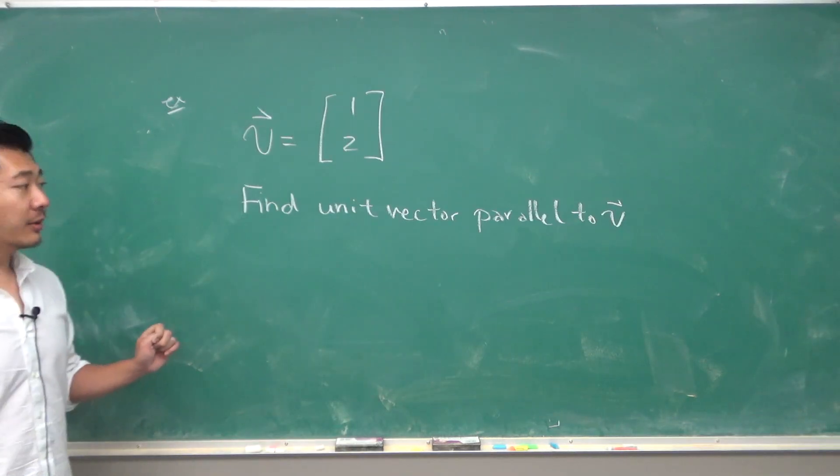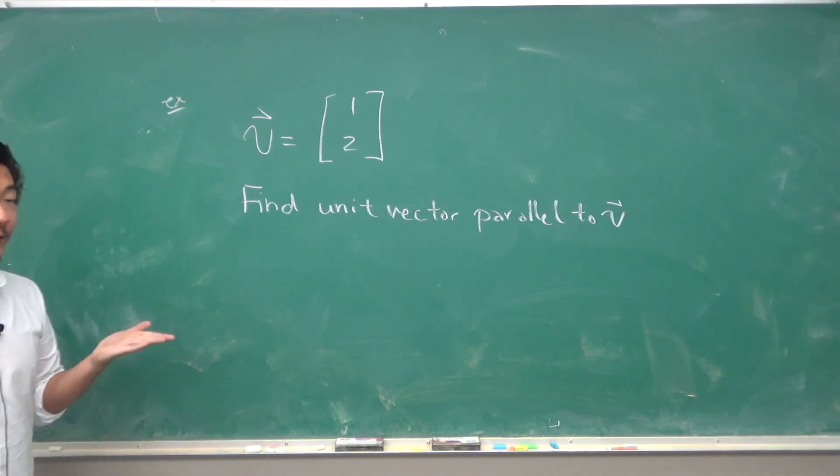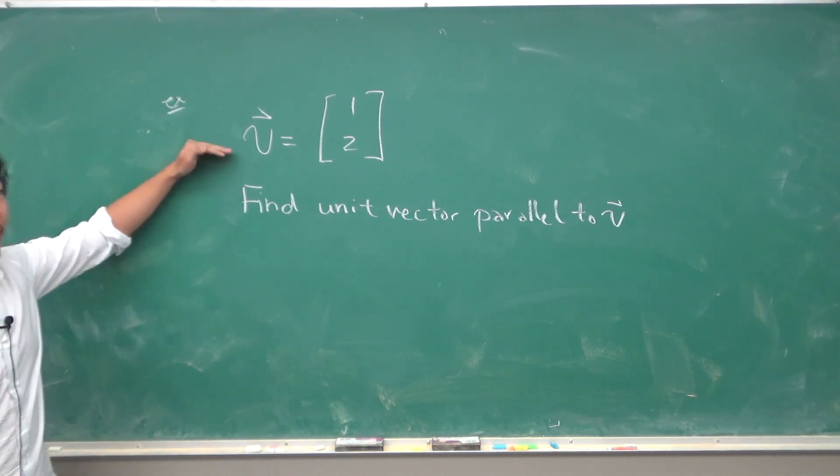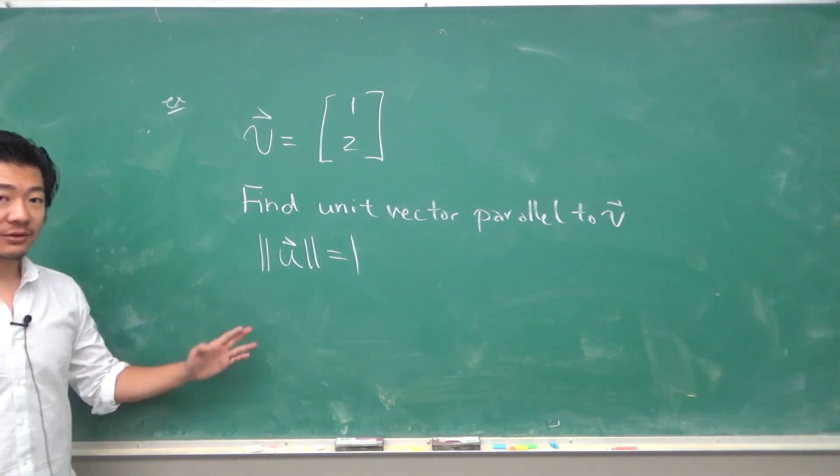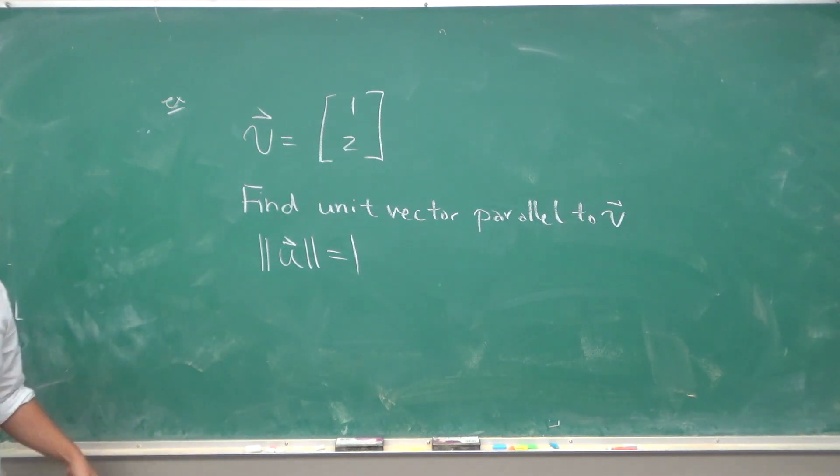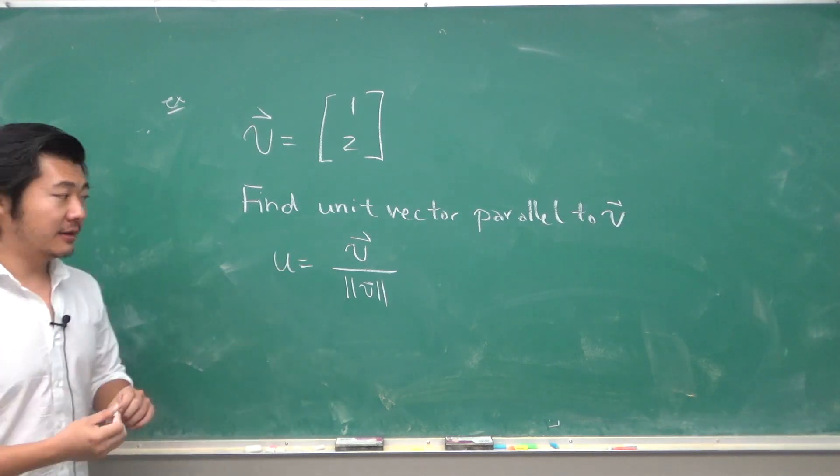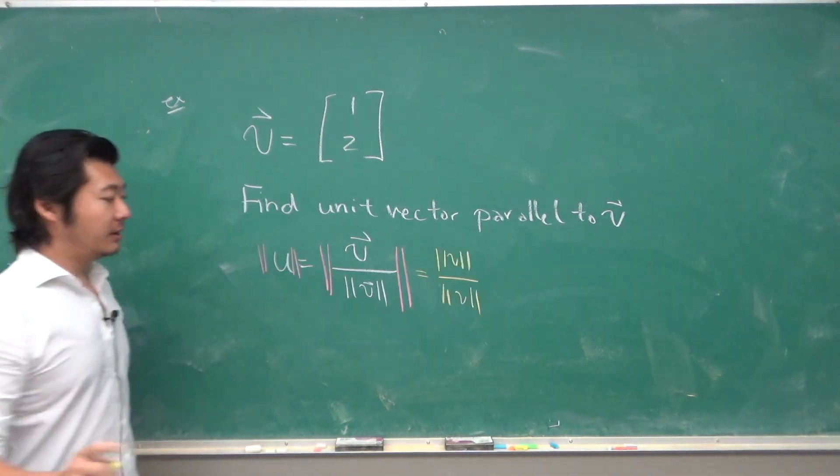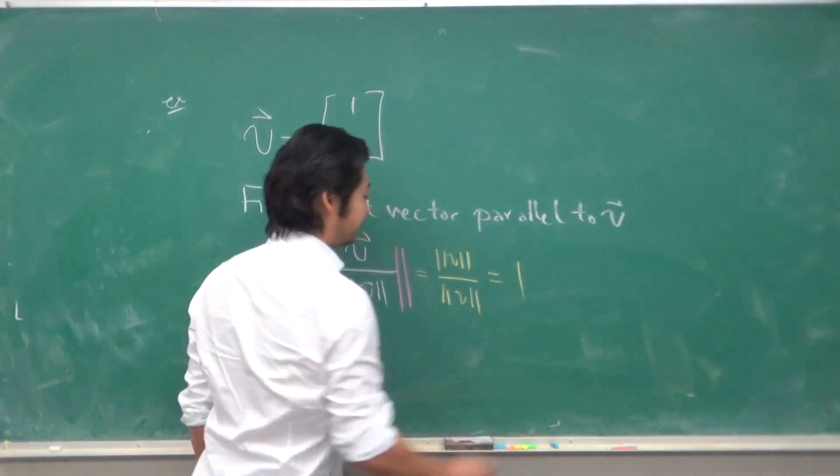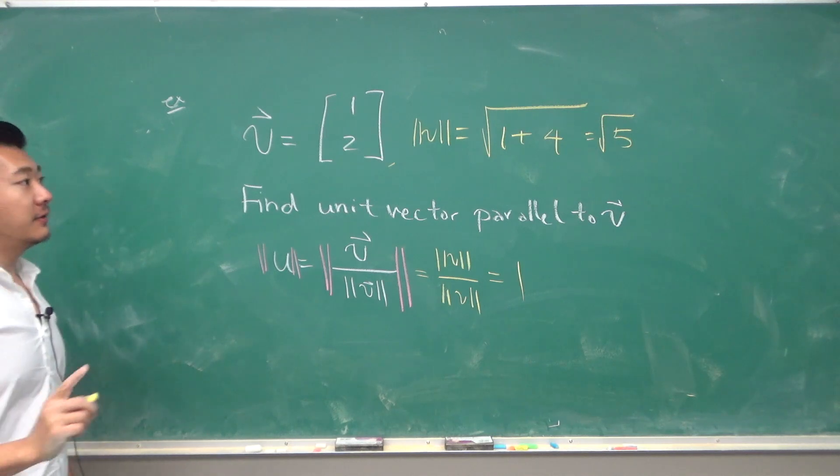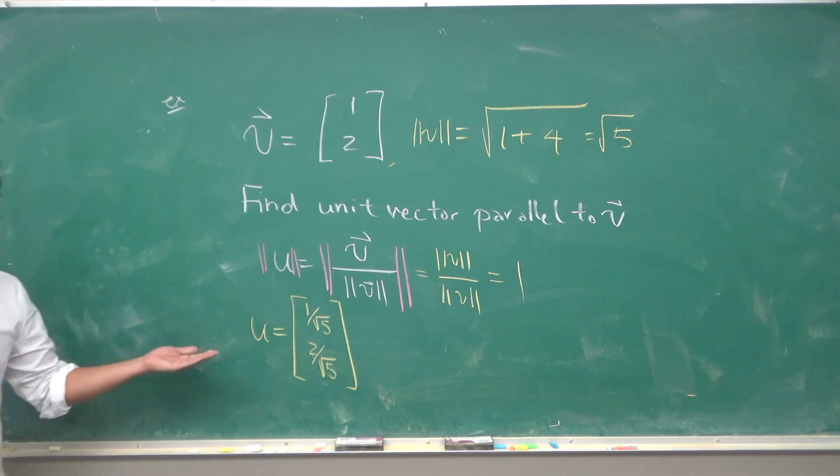So here is an example that might pop up. If we want to find what's called the unit vector parallel to V, well, what we want to find is a vector that's going in the direction of V, but it is of unit length. So we want the magnitude or the length to be 1, but that's pretty easy to do. Just divide the vector V by its length. Then if you take the length of the whole thing, then you get magnitude of V divided by the magnitude of V, which is 1. So in this case, the length of V is root 5. So a unit vector going in the direction of V is given by 1 over root 5 and 2 over root 5.